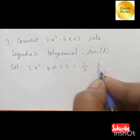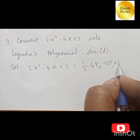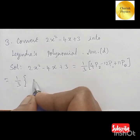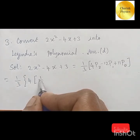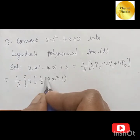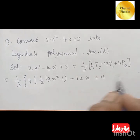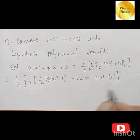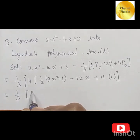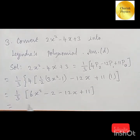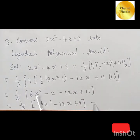Option D is (1/3)(4P₂ minus 12P₁ plus 11P₀). We should know the values of P₀, P₁, and P₂. This equals (1/3)[4·(1/2)(3x²−1) − 12x + 11]. Cancelling 4/2 gives 2, so we get (1/3)(6x² − 2 − 12x + 11) = (1/3)(6x² − 12x + 9). Dividing by 3 gives 2x² − 4x + 3. Confirmed.